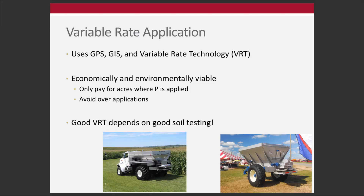Variable rate application uses GPS and some kind of GIS tool to map spatial variability. VRT — variable rate technology — is the common industry term. This looks at spatial variability in a field and makes applications based on that. It only works if you're soil testing on a zone or grid sampling basis — taking a field, subdividing it into subunits, getting soil test information from each, and making applications based on that. Good VRT depends on good soil testing; that's a prerequisite. You need to break the field into smaller subunits.